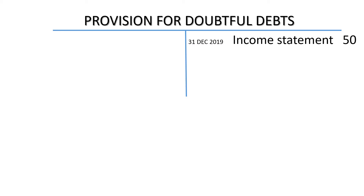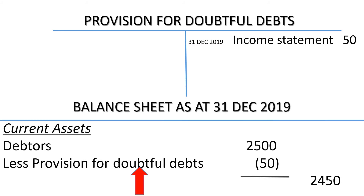In the balance sheet, the provision for doubtful debts is subtracted from debtors.